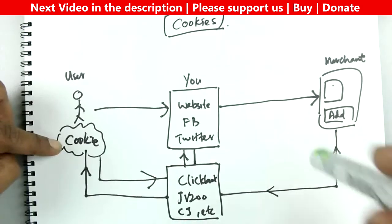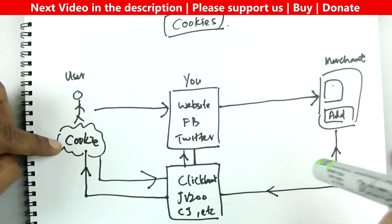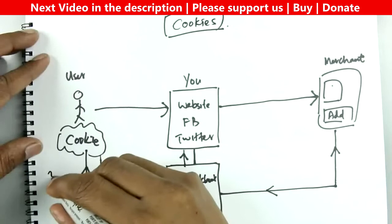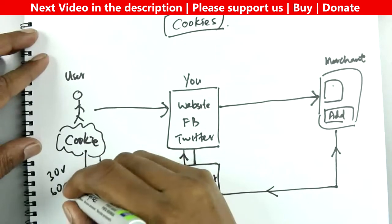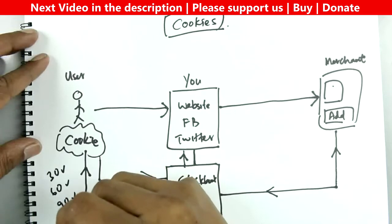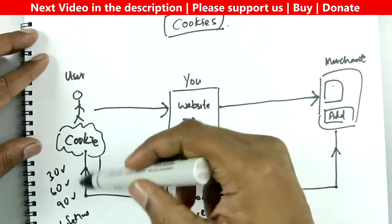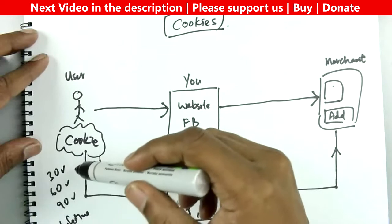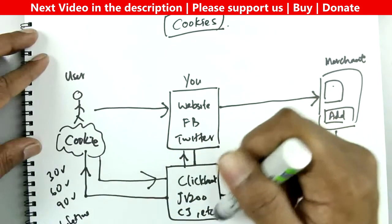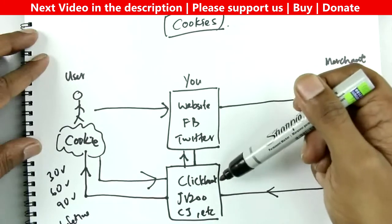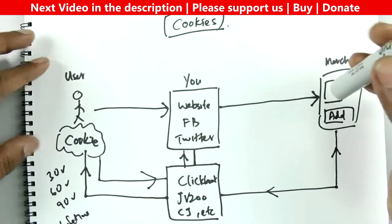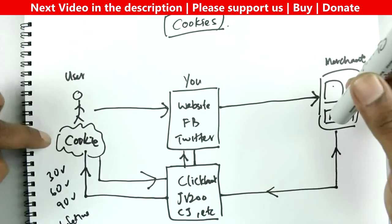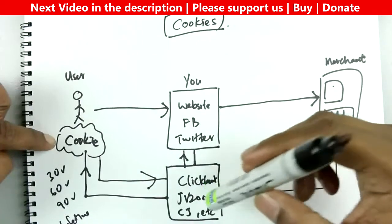In that case, the affiliate platform cannot tell you were the referring affiliate and you don't get credited for the sale. That said, the chances of that happening are very small. Cookie expiration periods are most commonly 30 days, with some programs offering 60, 90 days, or lifetime. Cookies are the backbone of affiliate marketing - they control and track almost all affiliate commissions across platforms.